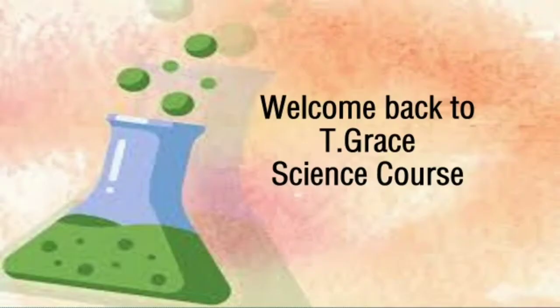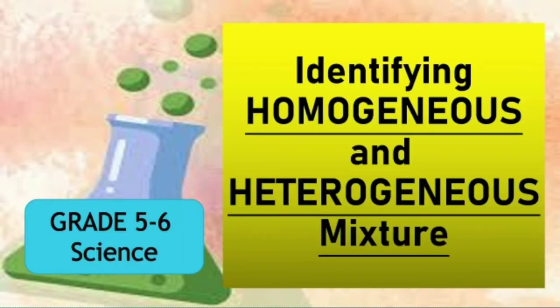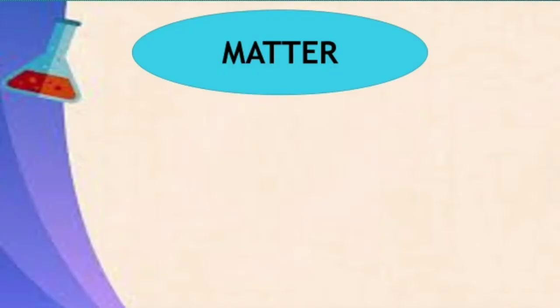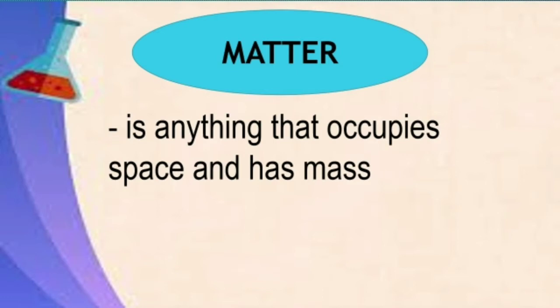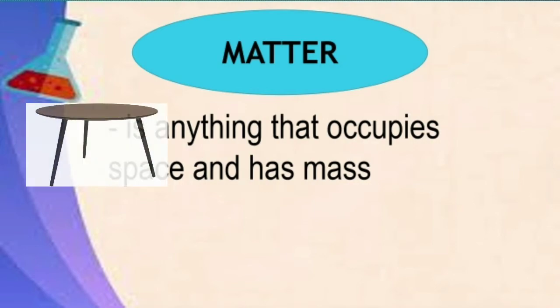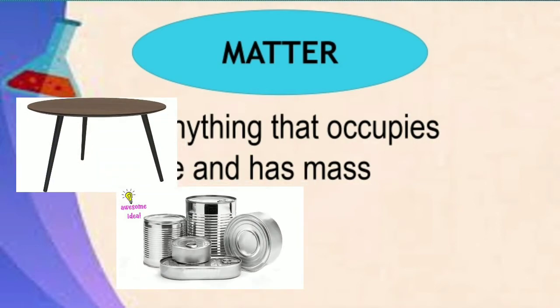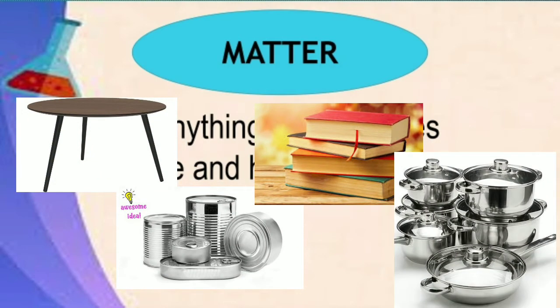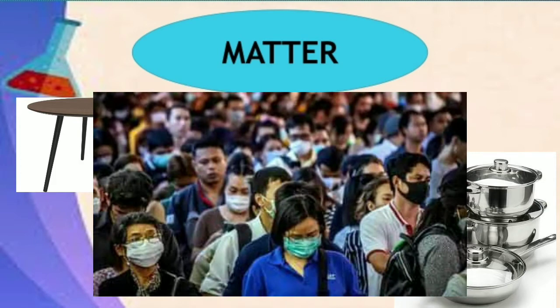Hello everyone, welcome and welcome back to Teacher Grace's Science Course. Today we will be talking about homogeneous and heterogeneous mixtures. You have learned that all living things are made up of matter. Matter is anything that occupies space and has mass, such as tables, tin cans, books, kitchenwares, and even humans. Almost everything around us that we see is made up of matter.